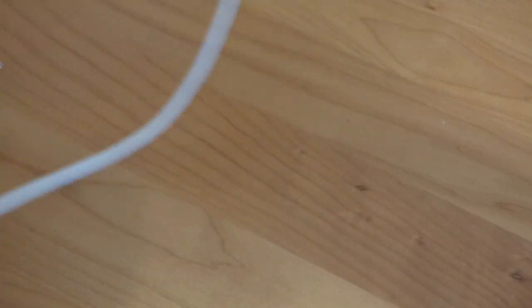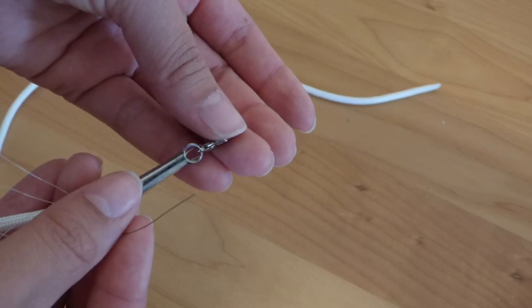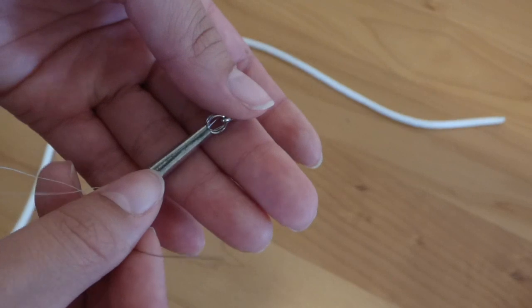So you'll repeat the same thing on the other side, but obviously I would just use a split ring instead of the split ring and the lobster clasp.